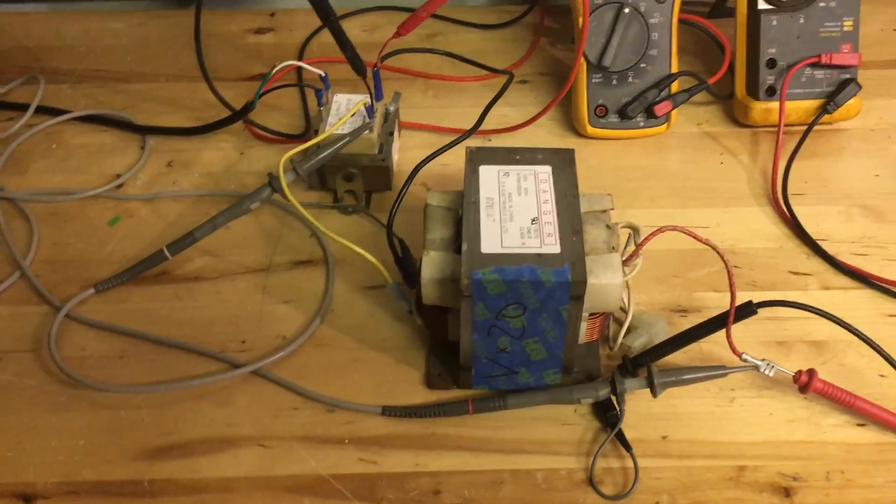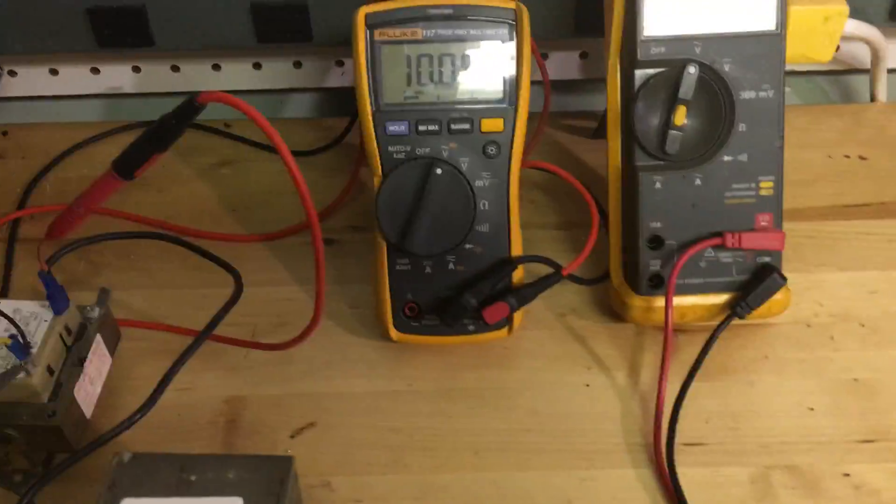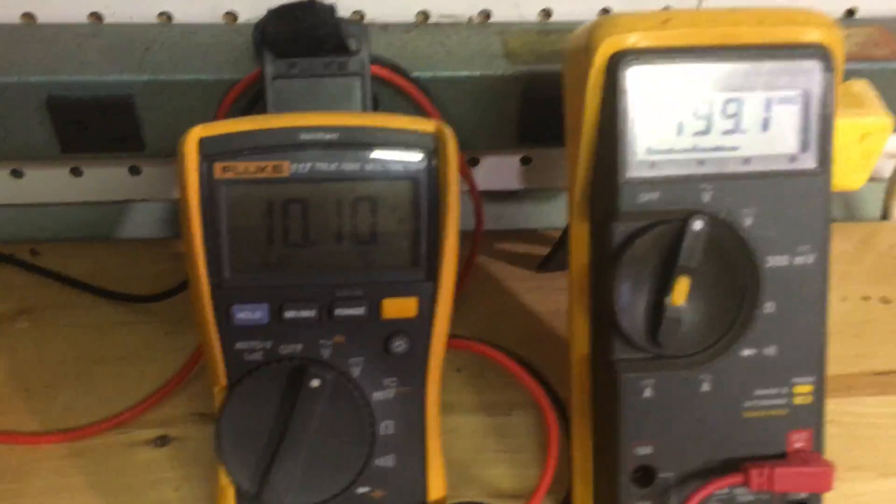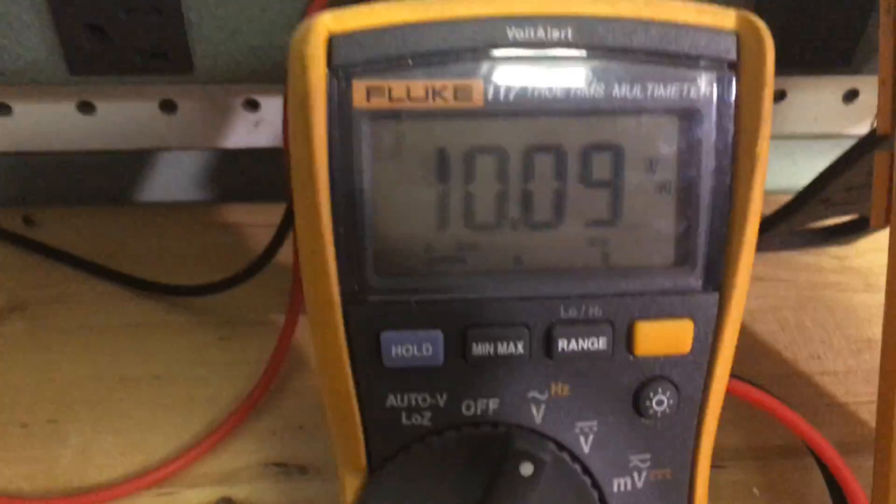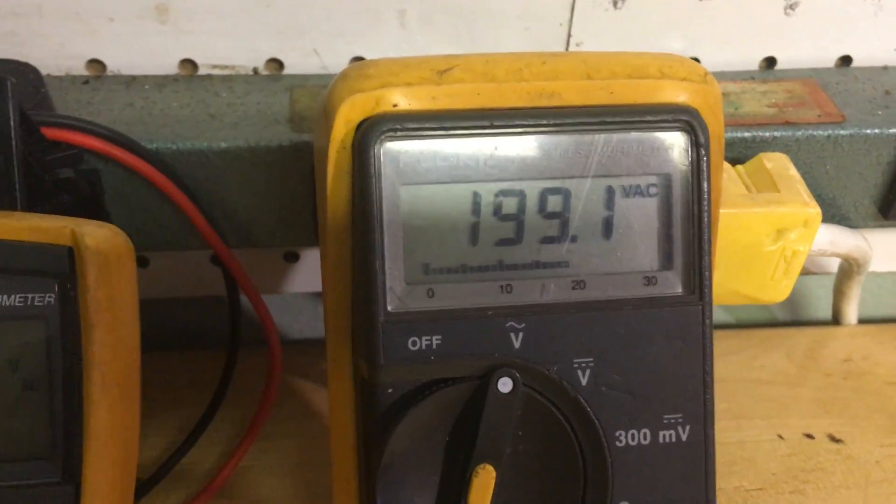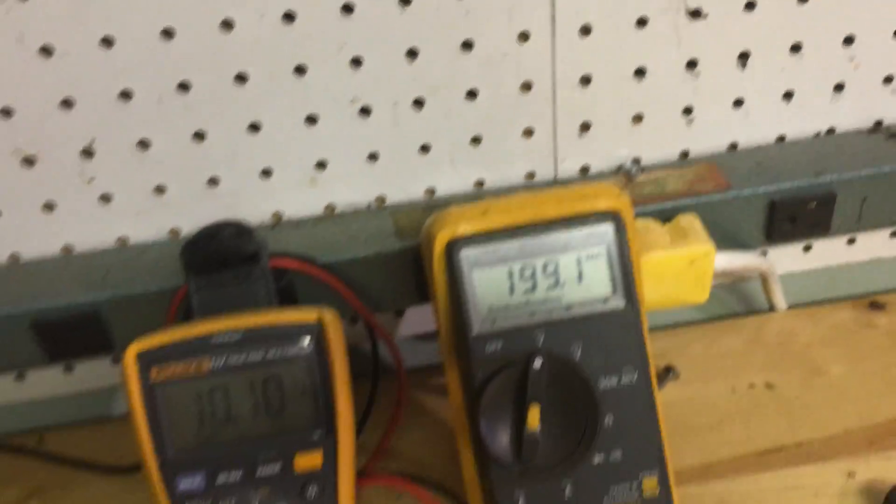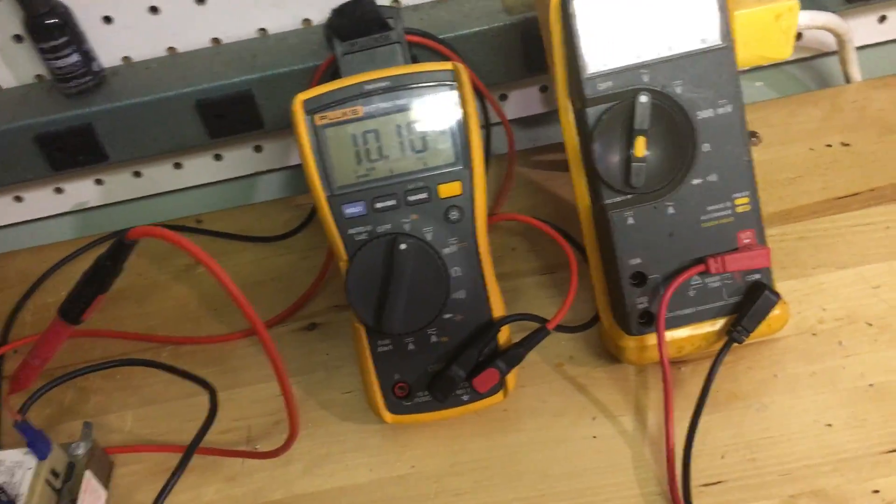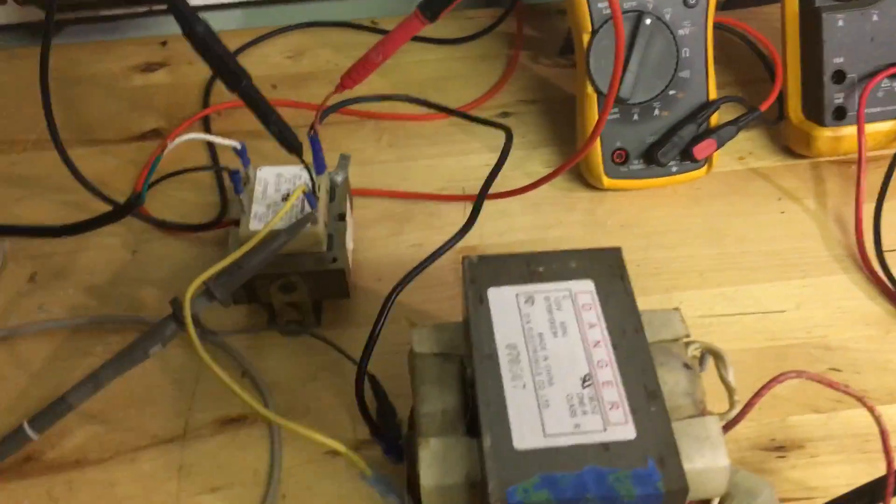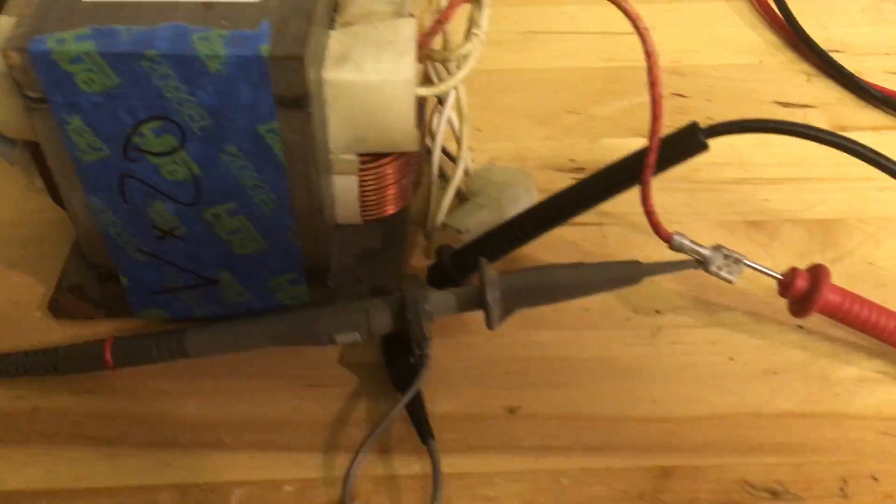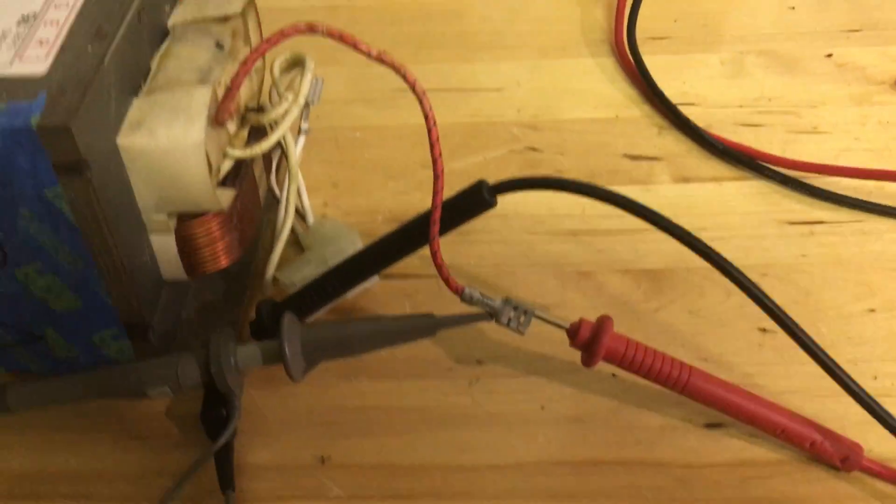So it worked, and you can see the two meters. This one: 10 volts coming in, 199 volts coming out. So basically voltage times 20. There's my connections on my output.